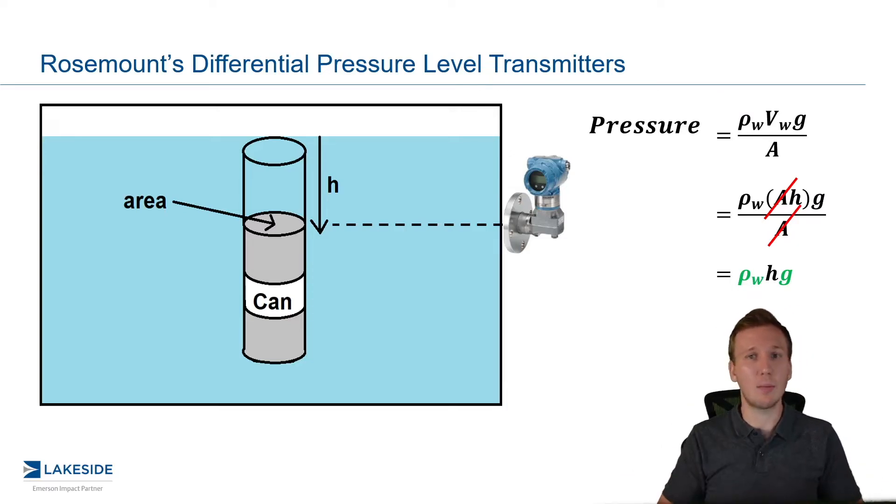The other thing as we bring it back into process controls is no matter where we install this DP level transmitter in the same horizontal plane in that vessel, it'll experience the same pressure readings. So very important takeaways.